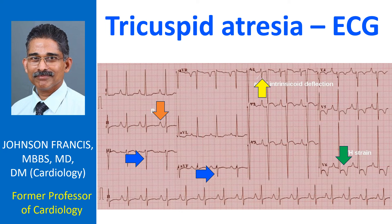All these features together in a cyanotic congenital disease are characteristic of tricuspid atresia.